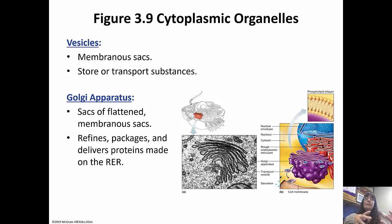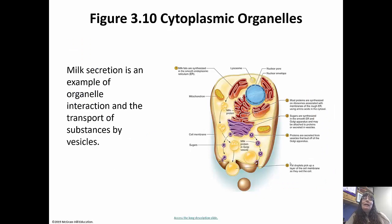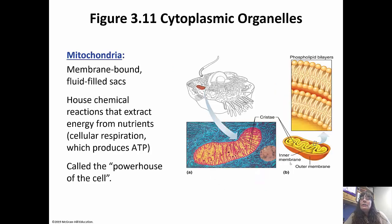The Golgi apparatus will modify any proteins or lipids that come into it, make sure they're correctly packaged, and then deliver them where they need to go. Milk is an example of organelle interaction and transport by vesicles — milk fats are synthesized in the smooth ER and then transported in a vesicle to go where needed. Mitochondria are the powerhouses of the cell, membrane-bound fluid-filled sacs where chemical reactions get energy from nutrients. They perform cellular respiration, producing ATP, or adenosine triphosphate, the energy currency of the cell.